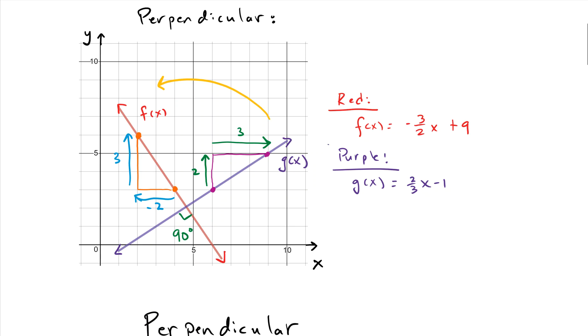So for the purple line, we get a slope of, if we use rise over run, two-thirds. If we look at the red, and we use rise over run, we get a negative three-halves. So what's the relationship between these two? Is there a relationship?